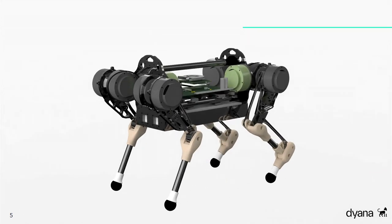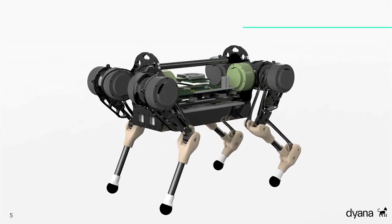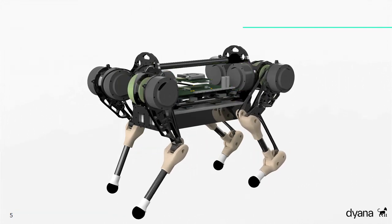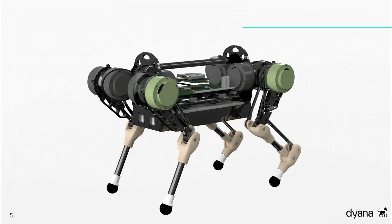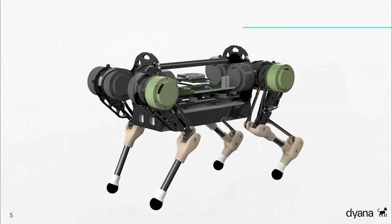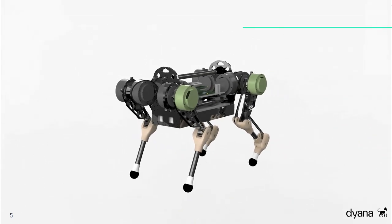Die Hüftrotation wird durch Motoren gewährleistet, die an den Endplatten des Torsos befestigt sind. Die restlichen Gelenke erlauben eine Beugung und Streckung der Hüfte und der Knie. Sie werden über Pleuelstangen durch die Aktuatoren bewegt. Das Hinterbein ist anders als das Vorderbein mit einem zusätzlichen Fußgelenk ausgestattet. Dieses ist mit dem Kniegelenk so mechanisch gekoppelt, dass das unterste Beinsegment immer in einem konstanten Winkel zu dem obersten steht. Dadurch benötigen wir keinen weiteren Aktuator für die Bewegung des Fußgelenks.